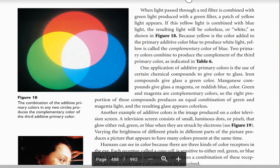This is page 488. When light passed through a red filter is combined with green light produced with a green filter, a patch of yellow light appears. If this yellow light is combined with blue light, the resulting light will be colorless or white as shown in Figure 18. Because yellow is a color added to the primary additive color blue to produce white light, yellow is called the complementary color of blue.